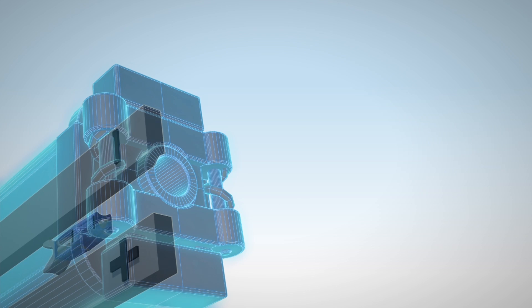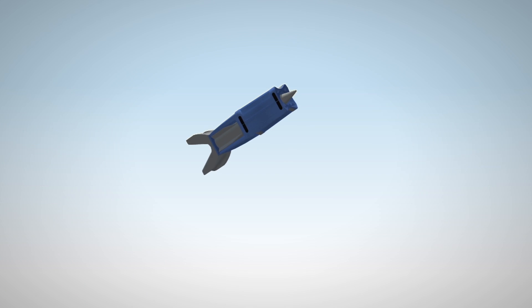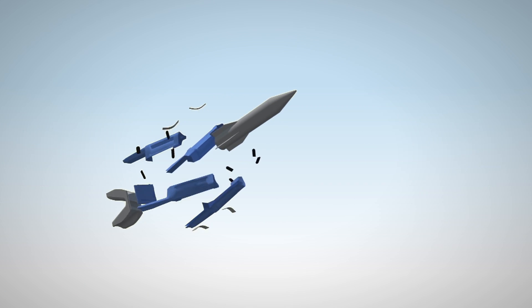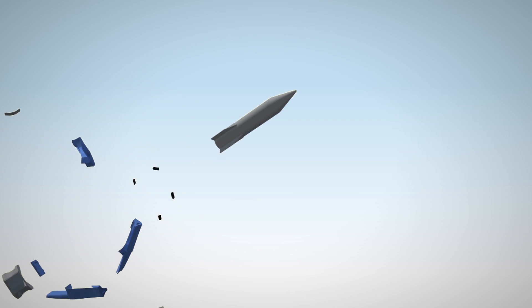The projectile is a non-explosive shell filled with tungsten pellets inside an aluminum alloy casing. The casing falls away after the projectile leaves the barrel.